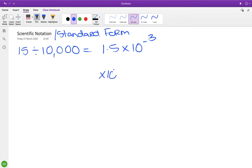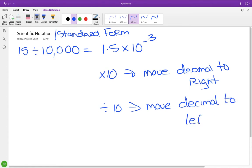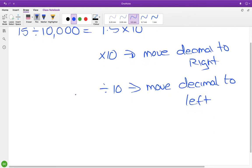You probably learned this in primary school: if you're multiplying by 10, you move the decimal to the right. If you're dividing by 10, you move the decimal point to the left.